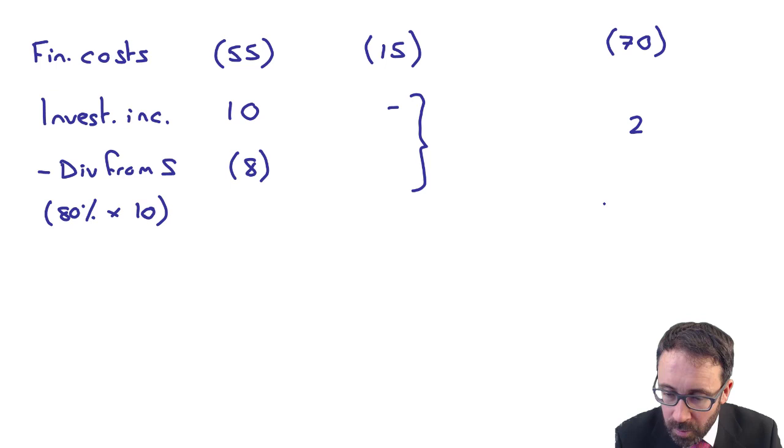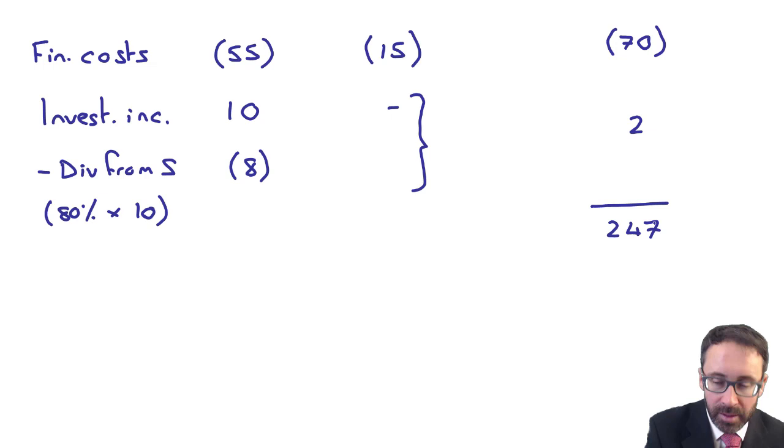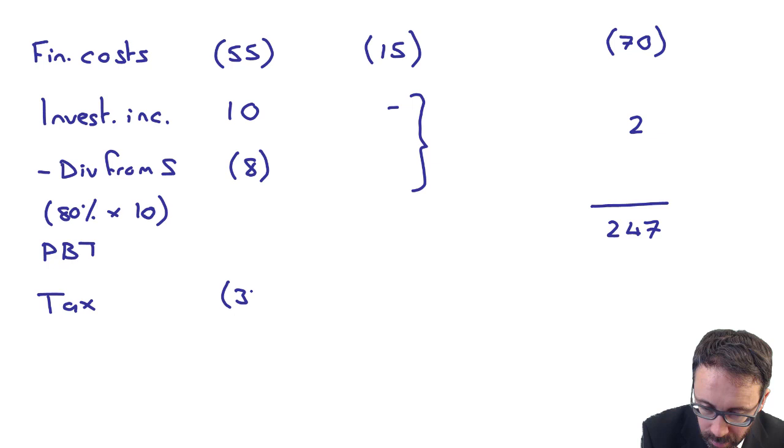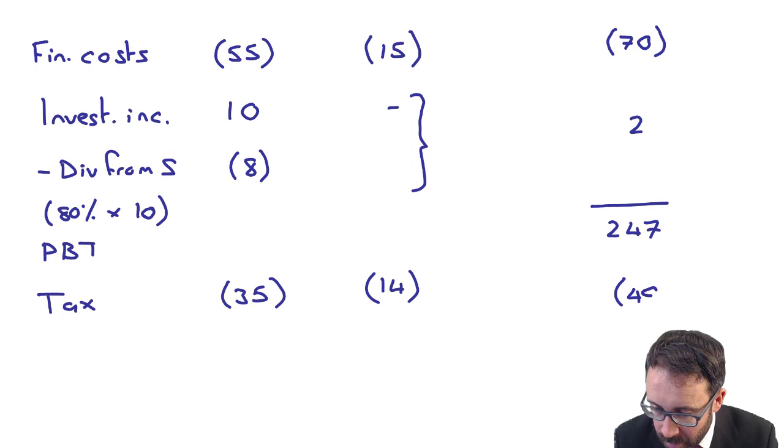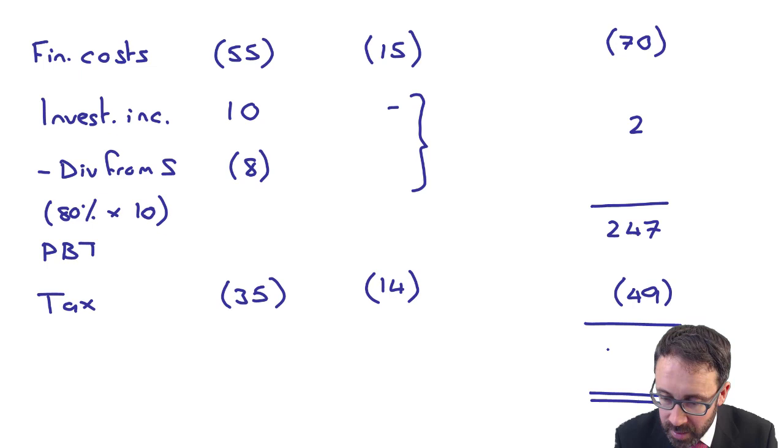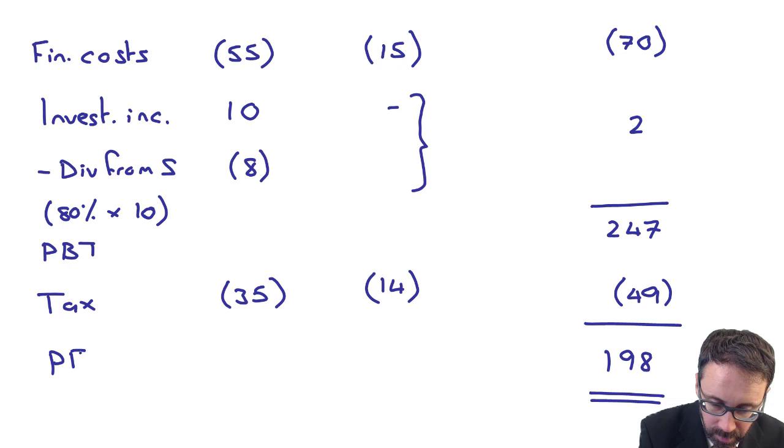When I go through that, total that up, does that give me two, four, seven? That is your profit before tax. The tax. 35 in the parent, 28 in the sub. So when we prorate it by six, that gives me 14. So that gives me 49. Which gives me profit for the year of 198. Excellent.